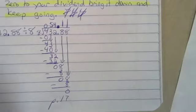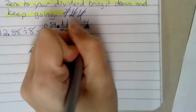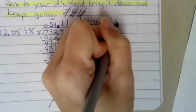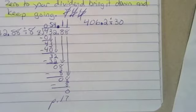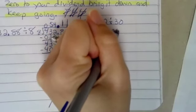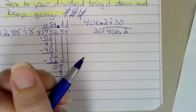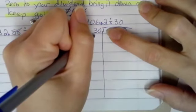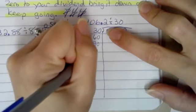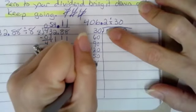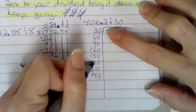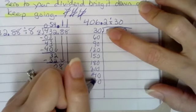Our next example is going to be 406 and 2 tenths divided by 30. So, first it says to write the problem using the division box. 406 and 2 tenths divided by 30. That's really close to my other problem. So I'm going to write my 30 times tables since I don't know them, but I do know my 3 times tables. 30, 60, 90, 120, 150, 180, 210, 240, 1, 2, 3, 4, 5, 6, 7, 8, 9 would be 270.